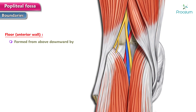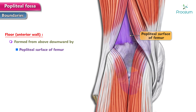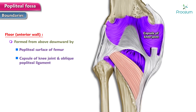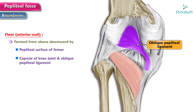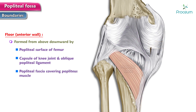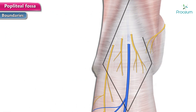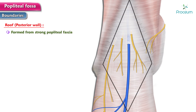The floor of the fossa is formed from above downwards by the popliteal surface of the femur, the capsule of the knee joint and the oblique popliteal ligament, and the popliteal fascia covering the popliteus muscle. The roof or posterior wall of the fossa is formed from the strong popliteal fascia.